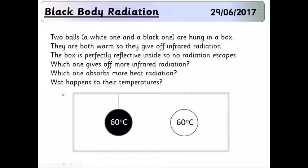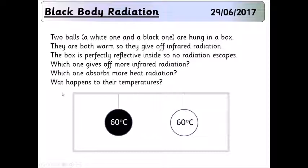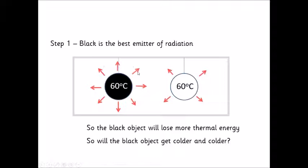To get us thinking about this, imagine we've got a box here that's totally reflective, so any radiation that hits the outside will reflect off it. I've hung two balls in here — one is 60 degrees C and the other is also 60 degrees C, but one is black and one is white. What's going to happen to these two balls, bearing in mind they're both going to give off and absorb radiation? Well, black is the best emitter of radiation, so the black ball will be giving off a lot more radiation than the white one. So you might imagine the black one will cool down much faster than the white one.